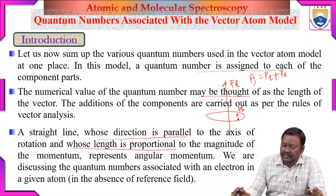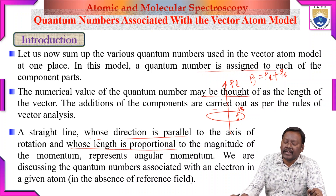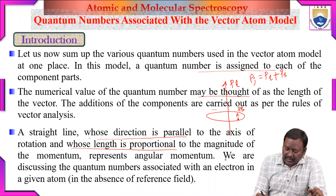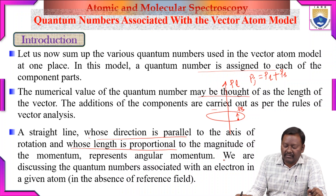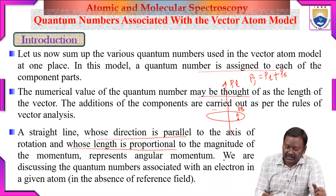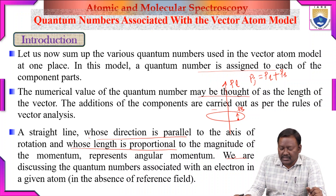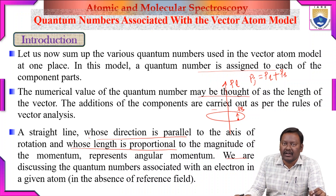Since P_l and P_s are vectors, we need vector addition analysis for finding the total angular momentum. All these things come into the picture whenever there is an applied magnetic field, which we use as a reference direction. We must discuss the quantum numbers for an electron in a given atom in the absence of a reference field, or the reference magnetic field must be zero or tend to zero.